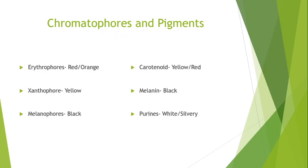This slide indicates that the color of the fish is due to the pigments, and these pigments are present in a special type of cells called chromatophores. Now we will discuss another type of specialized cells, iridocytes, in the next slide. First we will discuss about these chromatophores.